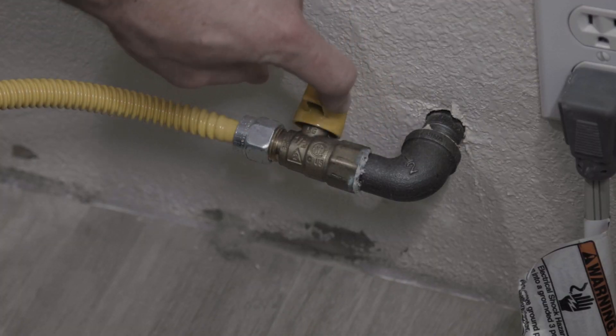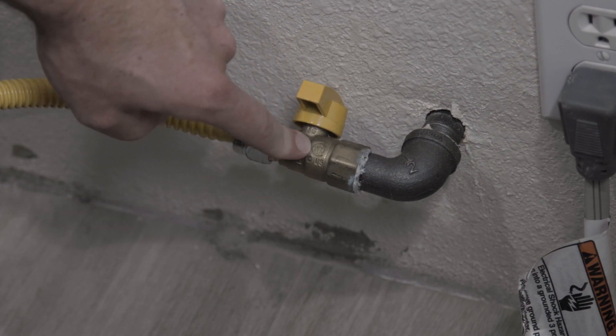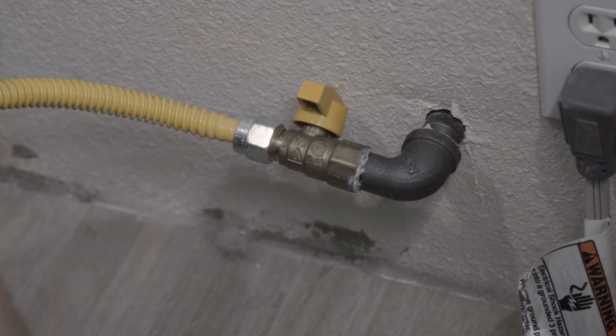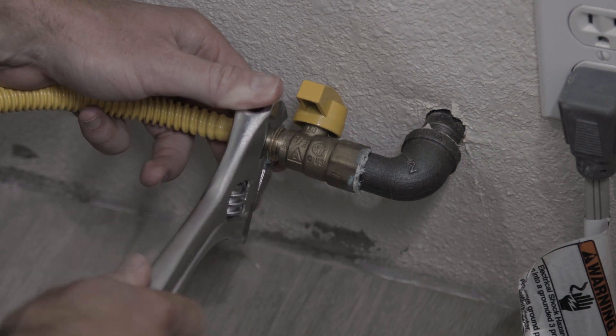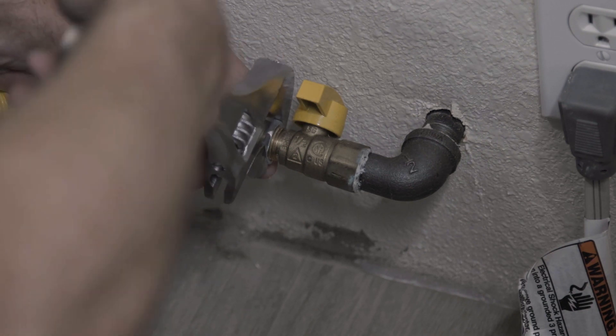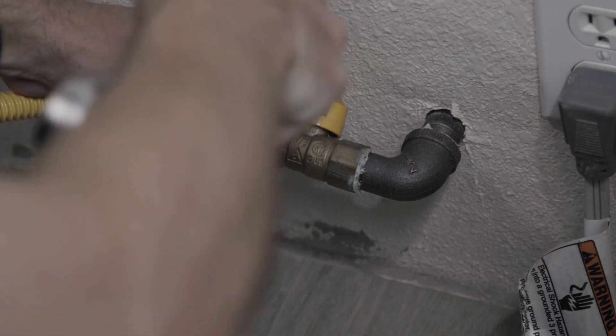This next step, you're going to need to shut your gas line off. Turn the knob perpendicular with your gas line. Then you're going to take a wrench and remove the gas line from your gas.